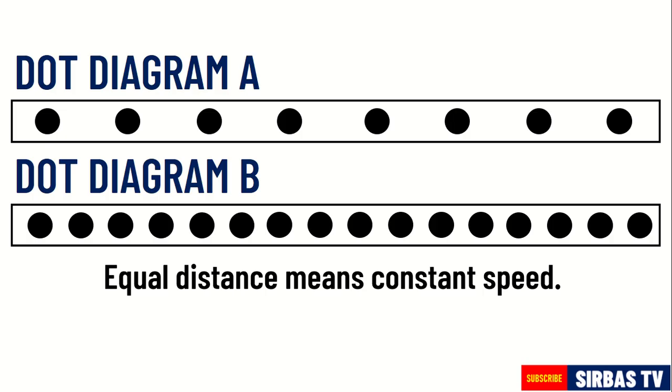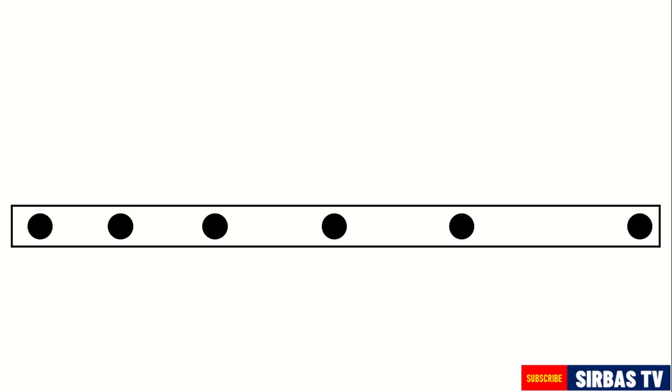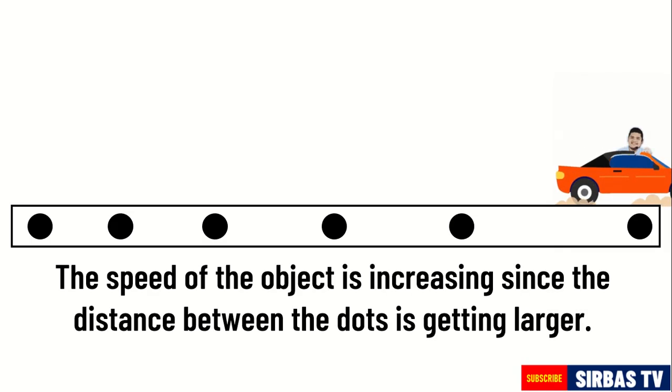Observe this dot diagram B. What can you say about the object's velocity? Is it increasing or decreasing? Correct! The velocity of the object is increasing. But why is this so? It is because the distance between the dots is getting larger. Remember, a larger distance means faster speed or velocity.